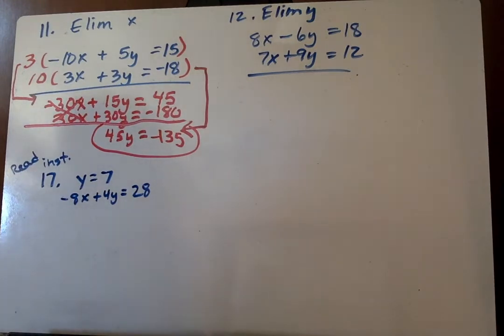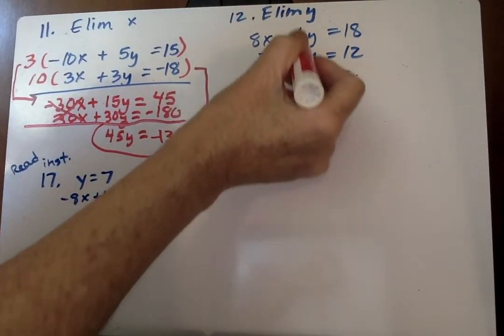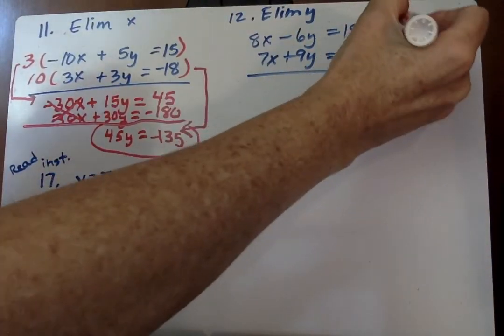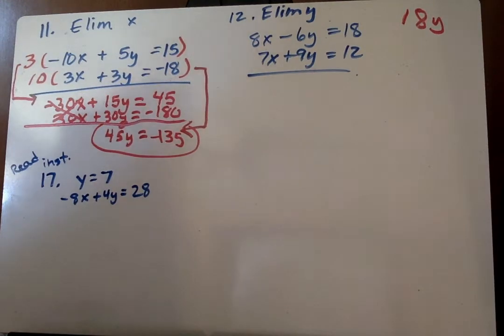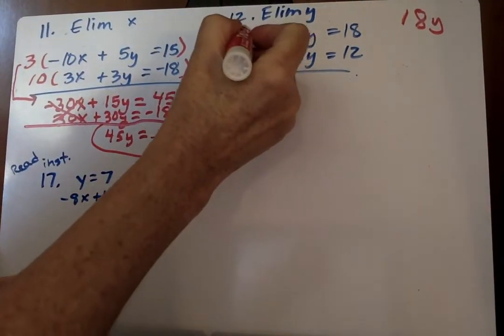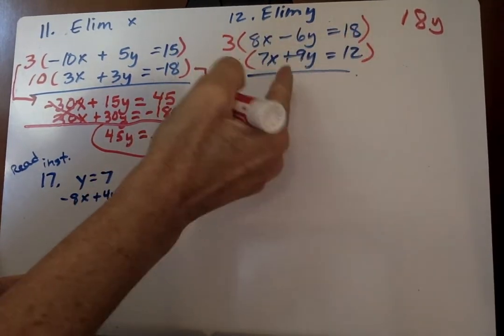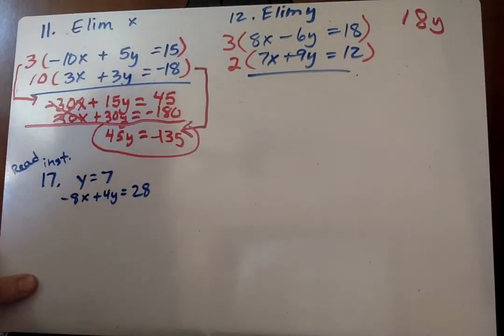Number 12. It says eliminate y. So we have these two equations. If we're going to eliminate y, 6 and 9, what is the least common multiple of those two? If I go 6, 12, 18, and 9, 18. So we want to get to 18y. We want a positive 18y and a negative 18y. Oh look, these are already opposites. So this one, to get to 18y, I need 3. And this one, I want positive 18y, so I'm going to multiply that by 2.